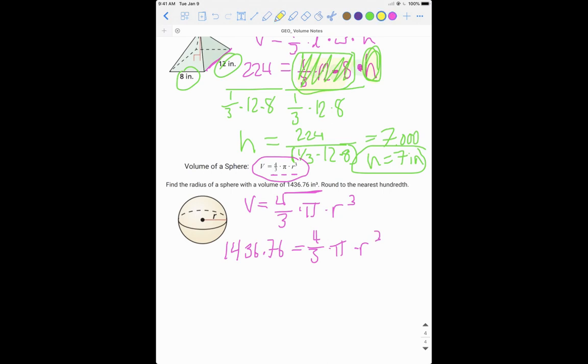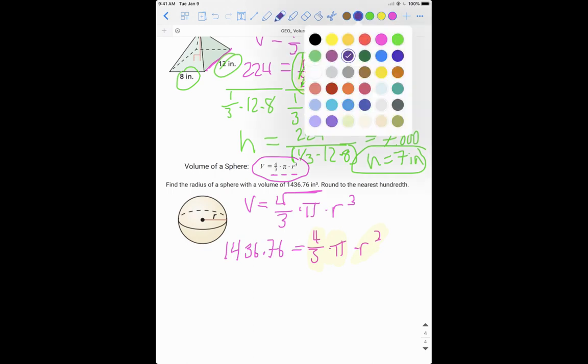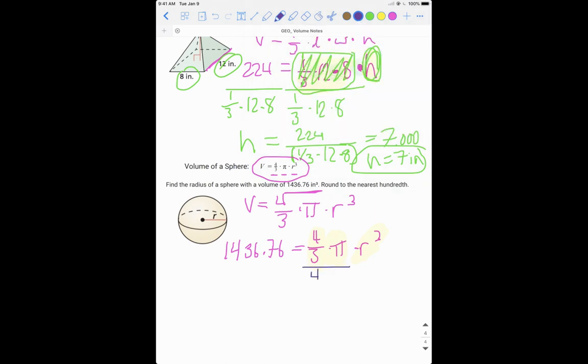So we have got to get rid of this four thirds and this pi in order to get r to the third by itself. So just like in the previous example, we're going to divide by that four thirds pi, whatever you do to one side, got to do to the other, divide by four thirds times pi. And that gets us that r cubed is equal to 1436.76 divided by four thirds times pi. And when you get there, you get approximately 343.01. Let's add a page.